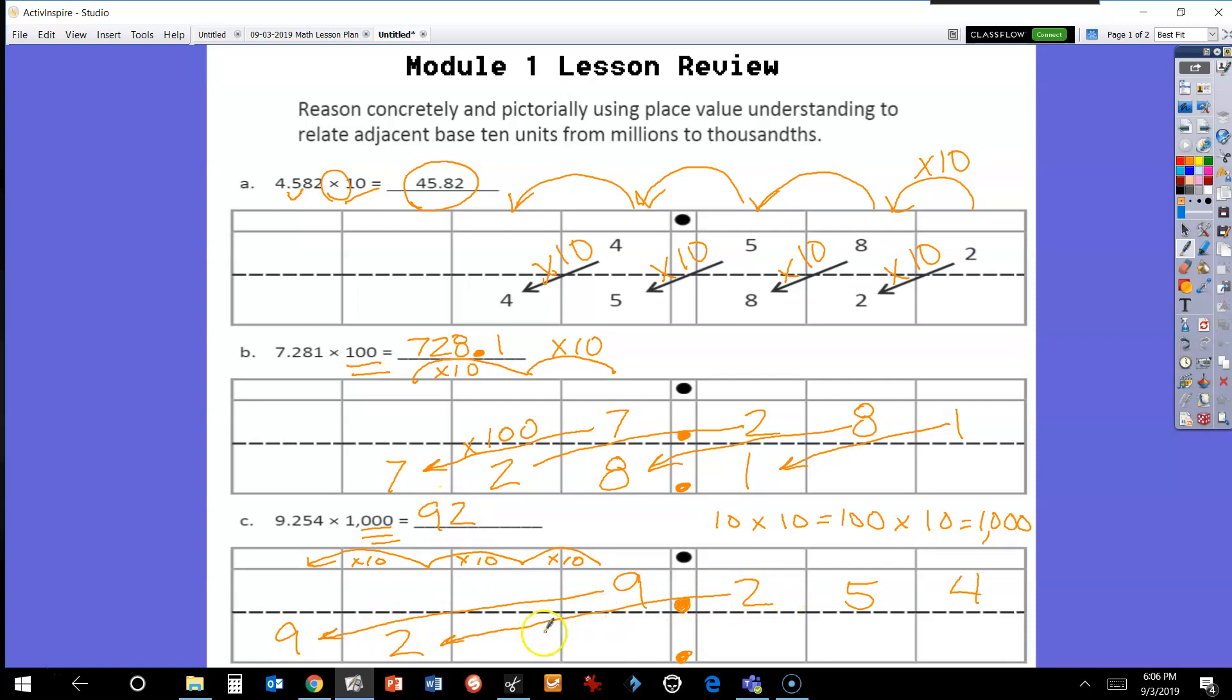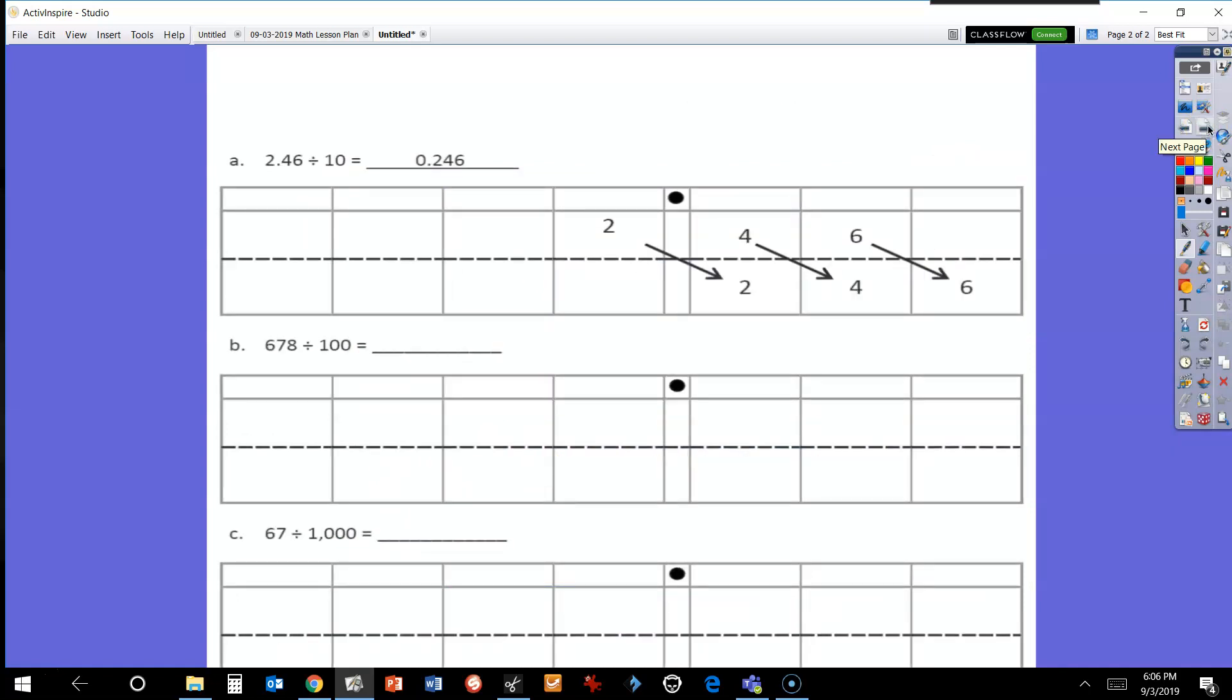Moving on to division, which is the opposite direction. When you divide something, it's going to get smaller. If you had two pieces of cake and you shared it with somebody, it would be impossible for you to have more than two pieces of cake when you were done sharing. Division: I know my numbers are going to be moving that way on a place value chart. I have 678 divided by 100, so I know I'm going to move two times, or two exponents, which is 10 times 10, or 10 to the second power.